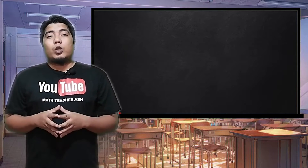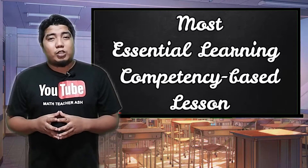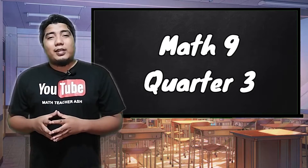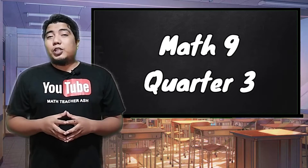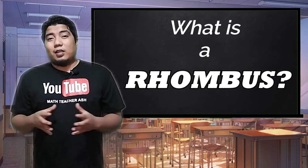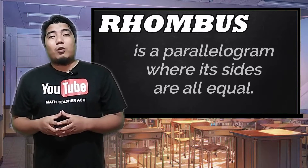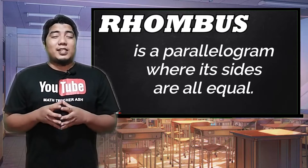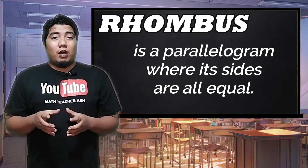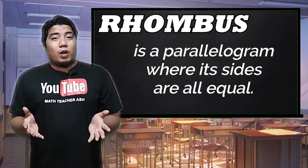Welcome to another session here in Math Learning with Sir Ash. Today, we're going to discuss the most essential learning competency-based lesson for Quarter 3 of Grade 9 Mathematics, which is all about the rhombus. A rhombus is a special parallelogram in which all of its sides are congruent, meaning all of the sides are equal.